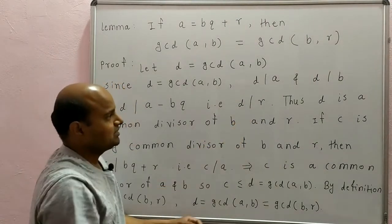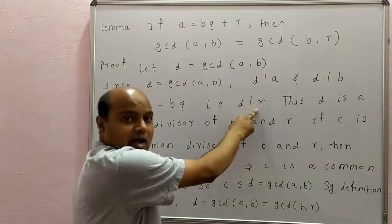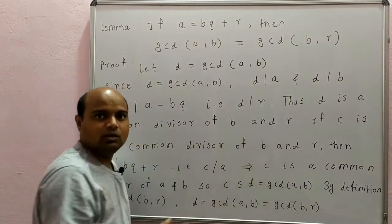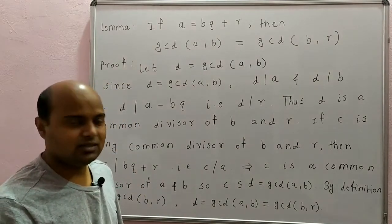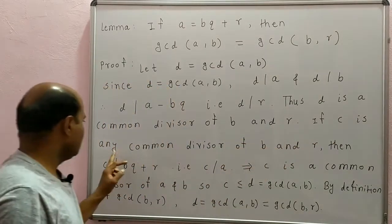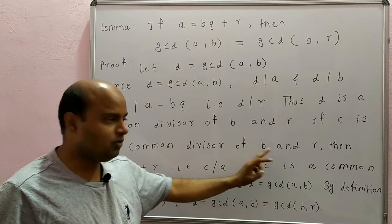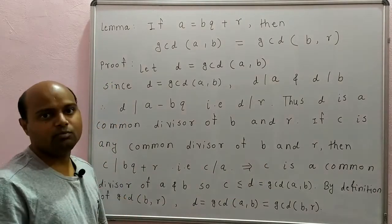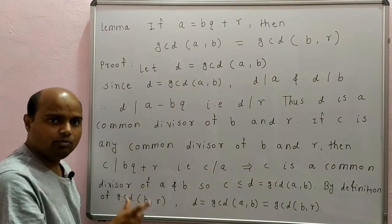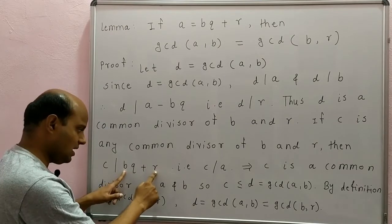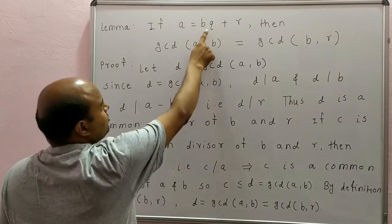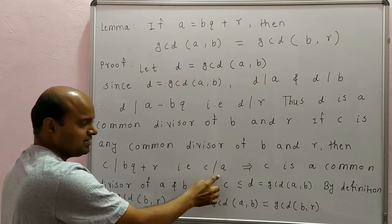Now, D divides B and D divides R. Therefore, D is a common divisor of B and R. Now, if C is any common divisor of B and R, then again C divides the linear combination of B and R. See here: BQ plus R is a linear combination of B and R. Therefore, C divides BQ plus R. But BQ plus R is A, so C divides A.